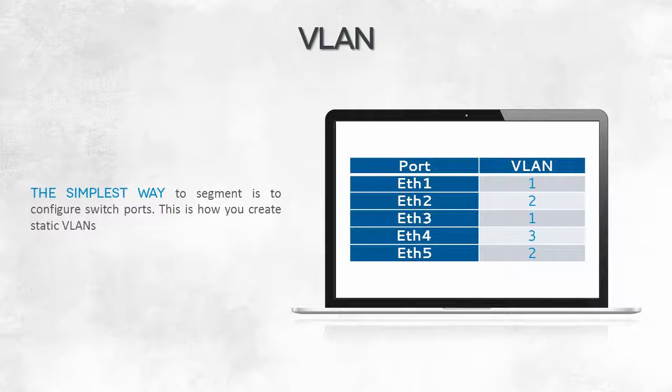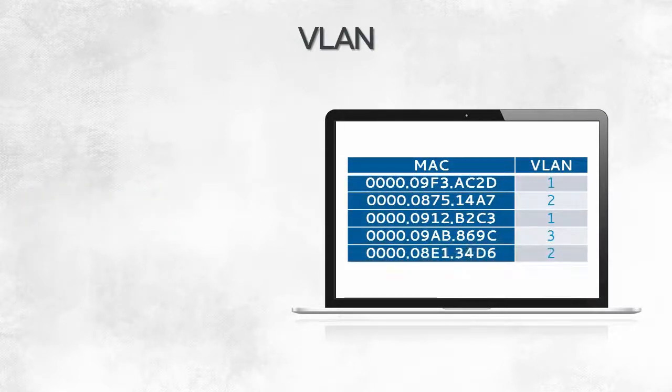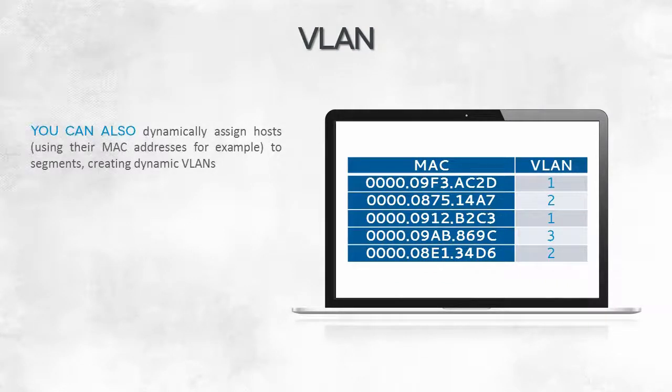VLAN numbers are assigned to the switch ports. A dynamic partitioning consists of assigning the MAC addresses of hosts to VLANs. In the case of the latter, it is no longer important which switch port an individual connects to — what matters is how the individual identifies themselves in the second layer. The switch controls the frames sent in one Ethernet packet so that they are delivered only to other hosts within the same VLAN.